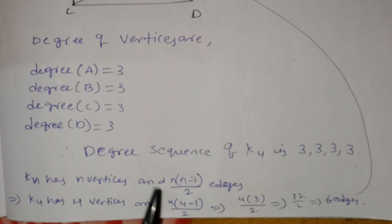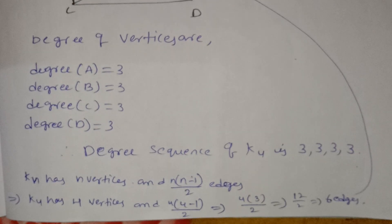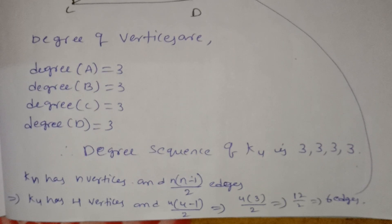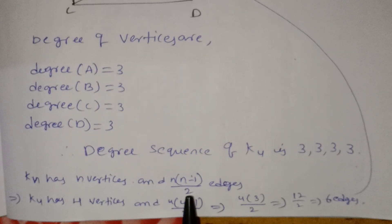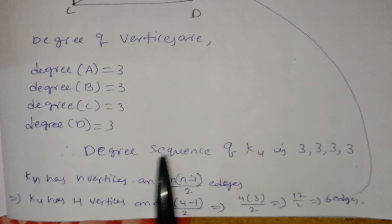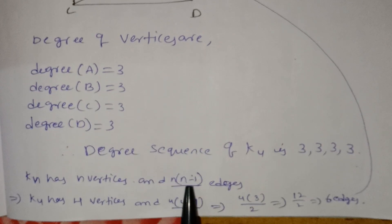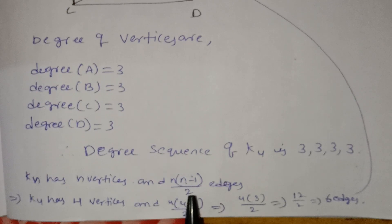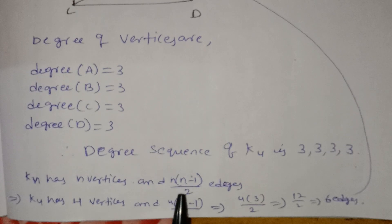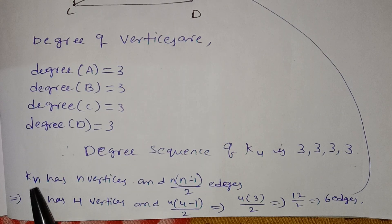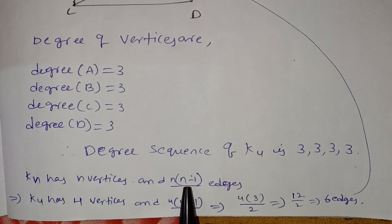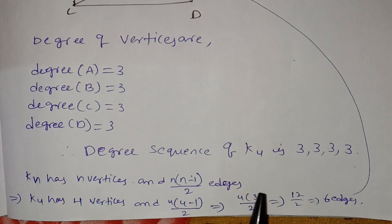The formula is here. The handshaking theorem is the fundamental theorem of graph theory. Using this formula, Kn has n vertices and n(n-1)/2 edges.